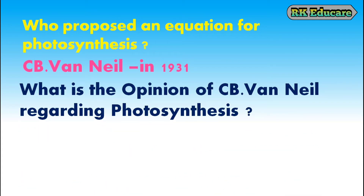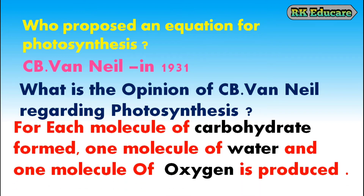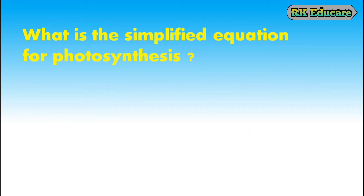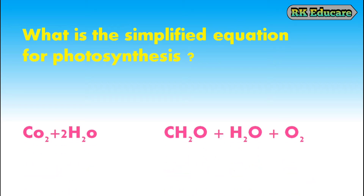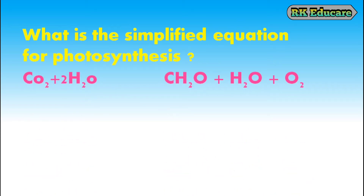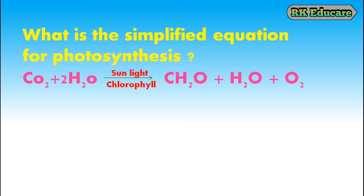What is the opinion of C.B. van Niel regarding photosynthesis? C.B. van Niel expected that for each molecule of carbohydrate formed, one molecule of water and one molecule of oxygen is produced. What is the simplified equation for photosynthesis? CO₂ + H₂O gives rise, in the presence of sunlight and chlorophyll, to CH₂O + H₂O + O₂.